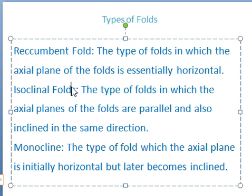Monocline is the type of fold in which the axial plane is initially horizontal but later becomes inclined.